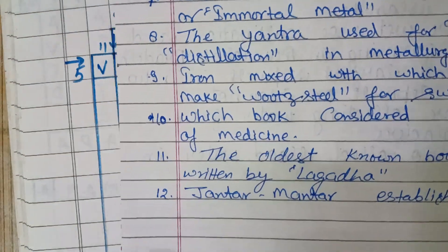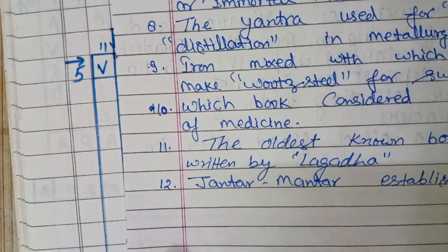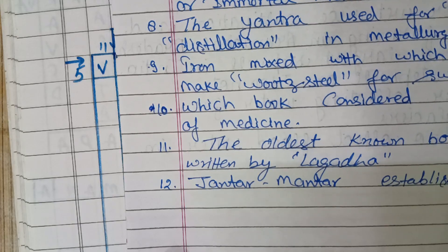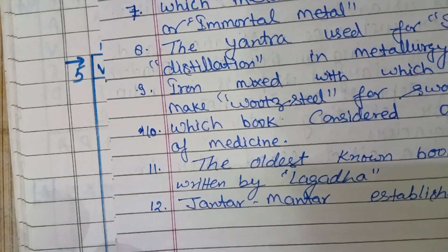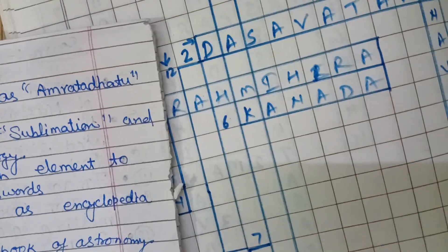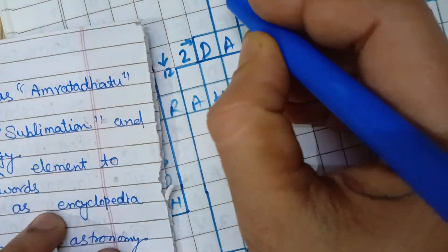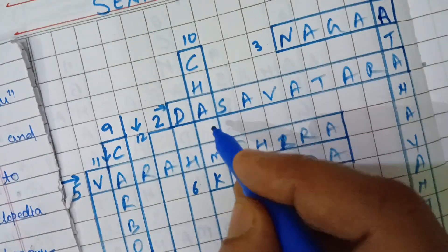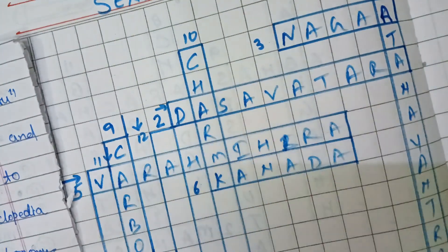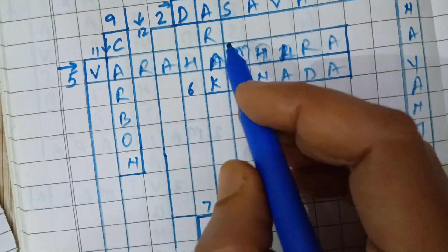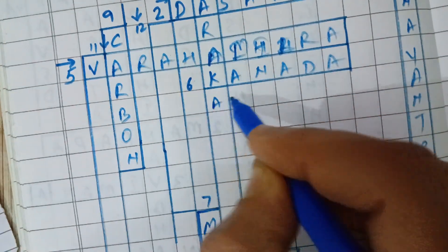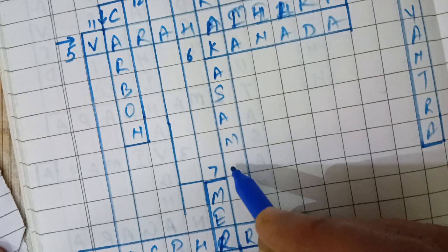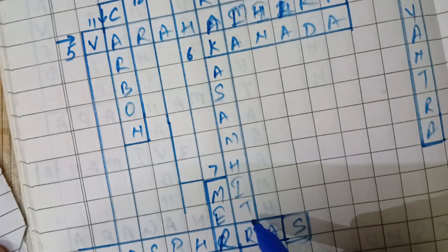Tenth downward: which book is considered the Encyclopedia of Medicine? The answer is Charak Samhita — C-H-A-R-A-K S-A-M-H-I-T-A.